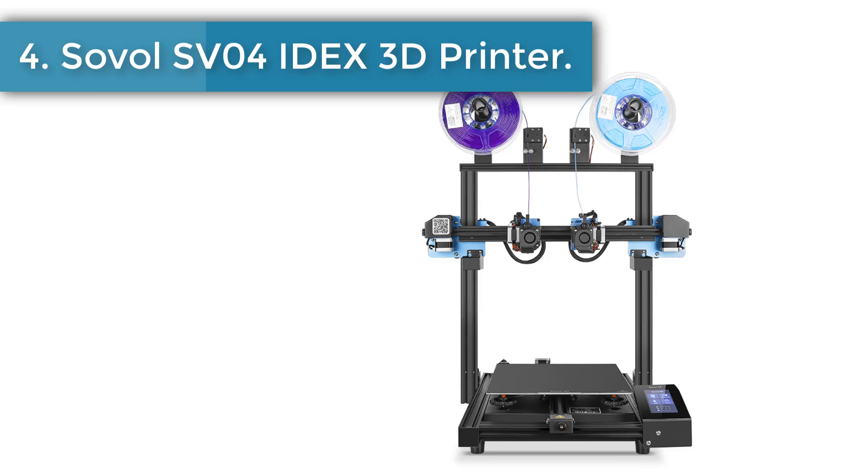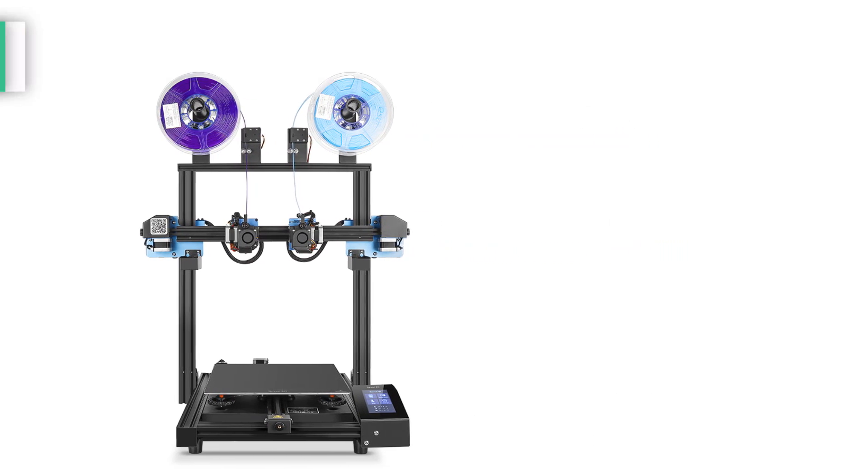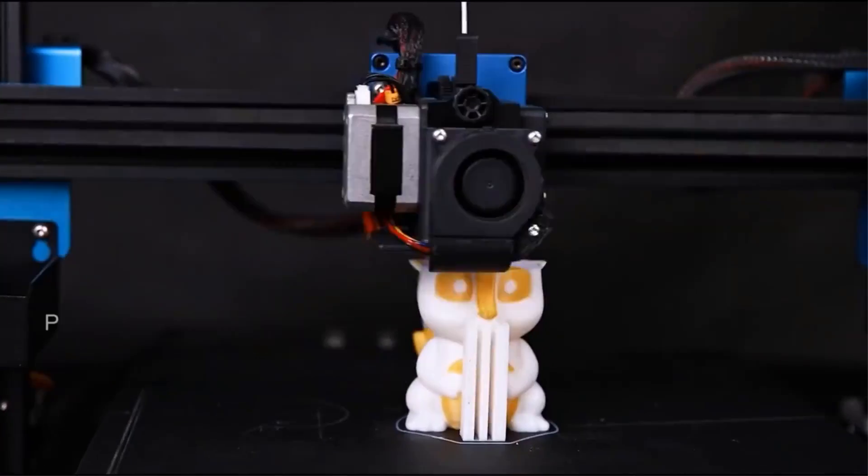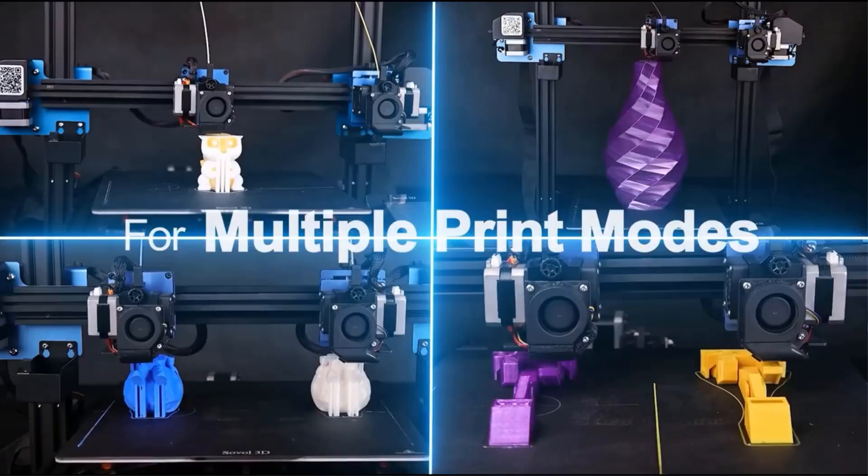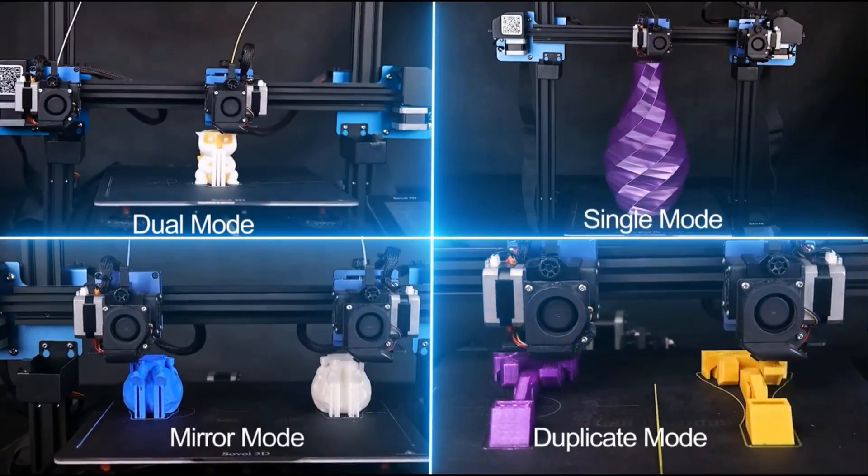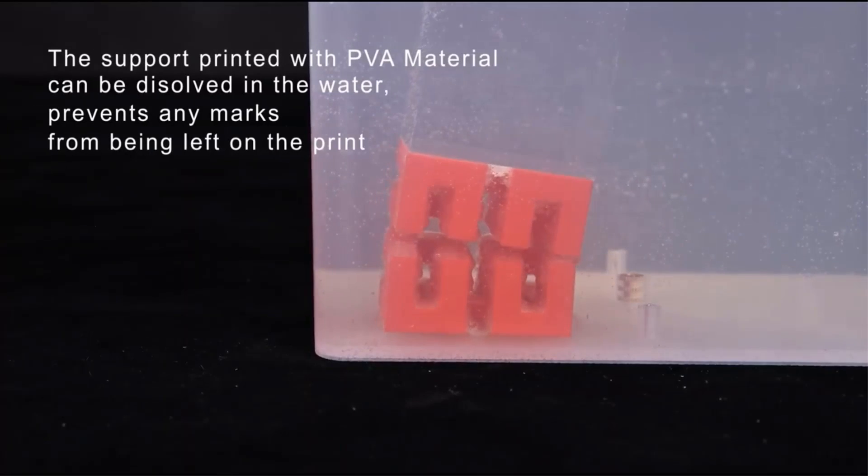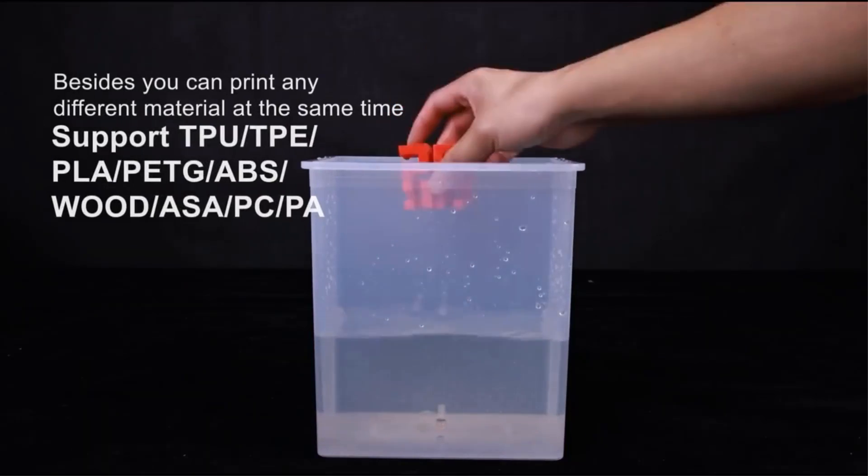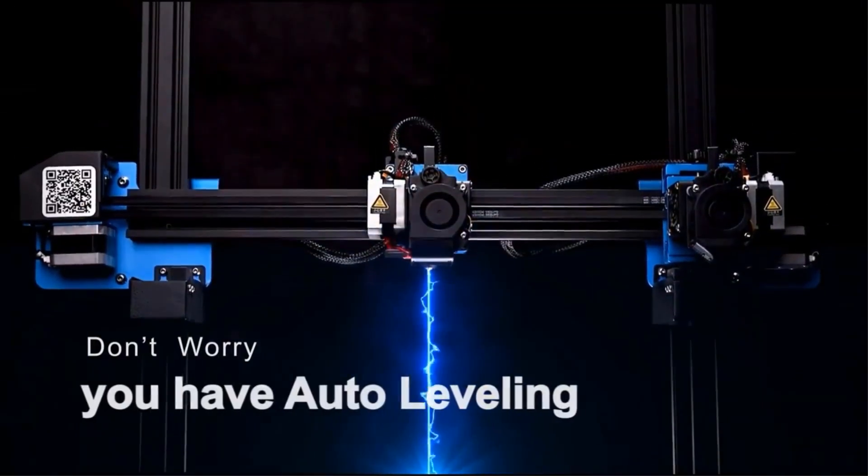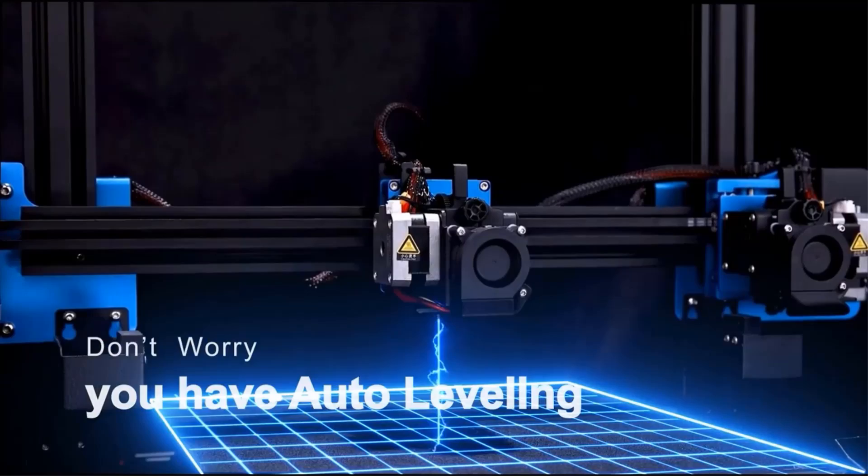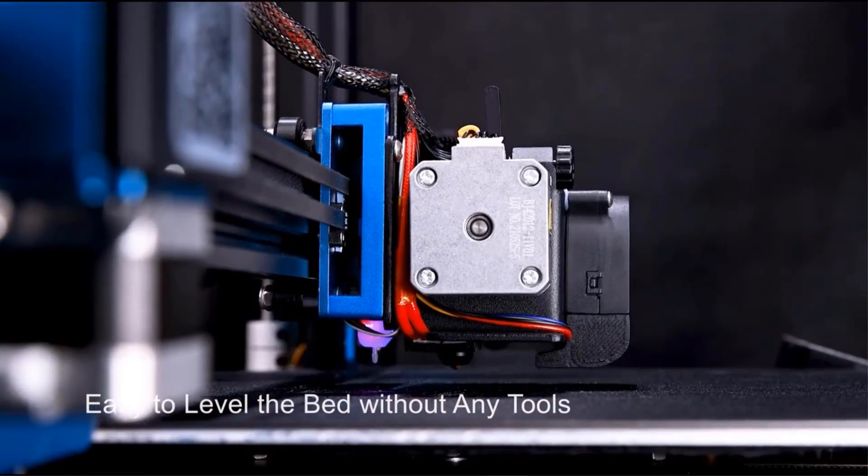Number 4. Sovol SV04 IDEX 3D printer. SV04 equips with dual metal Titan extruders which are more capable to produce high quality prints across a vast range of materials, such like PLA, ABS, PETG, TPU, PC, PA, wood, ASA, and PVA. 300x300x400 build volume makes SV04 the best large format independent dual extruder direct drive 3D printer in the market.